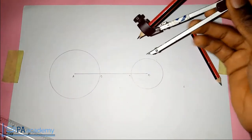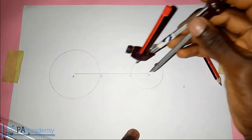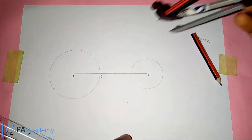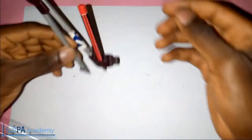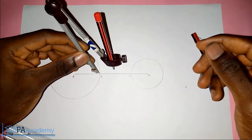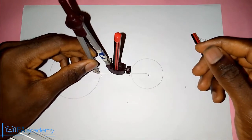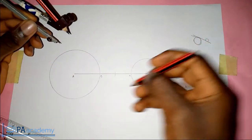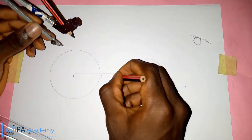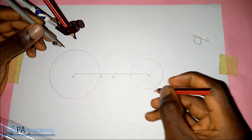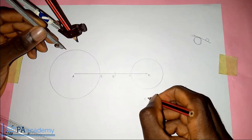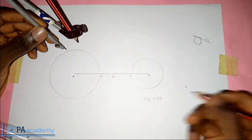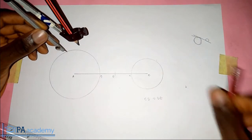So the next thing you have to do is, with the same radius we used to draw the circle — because if you notice, I didn't change it, it's still the same — with that radius, you put it on point D and then you just draw a small arc. Let's call that point E. So what it means is that CB equals DE.